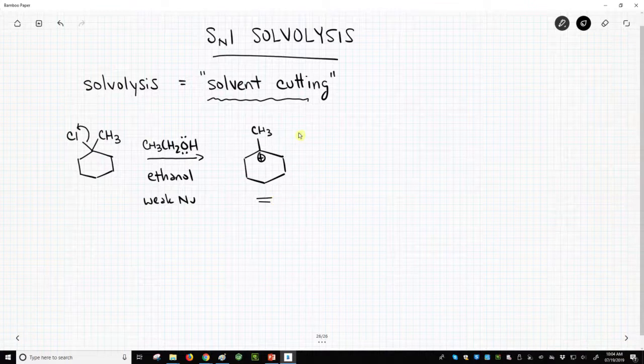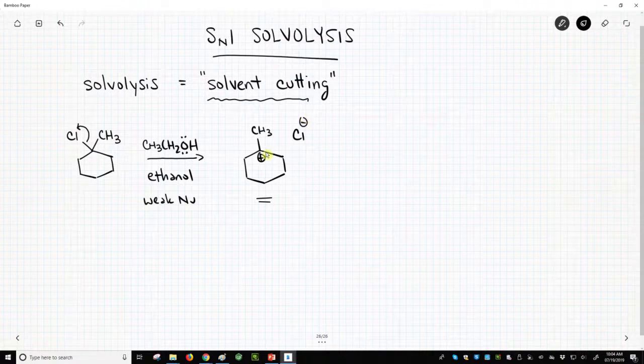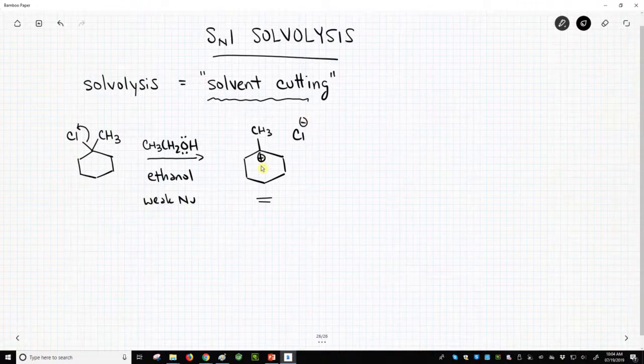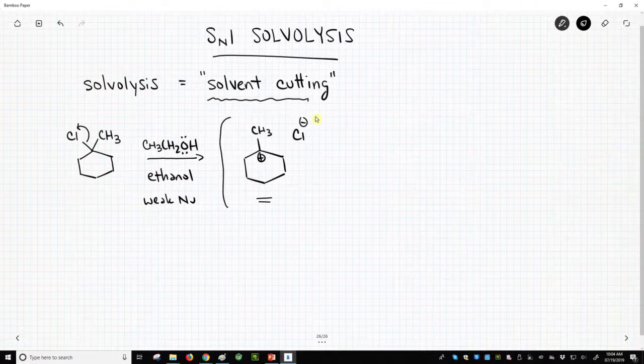Well, one, we have a fairly good leaving group, chloride, and the carbocation we're making is pretty good. It's a tertiary carbocation that's about as good as we can get, so this is our intermediate.